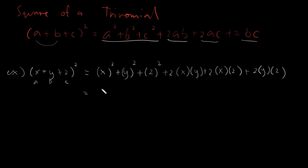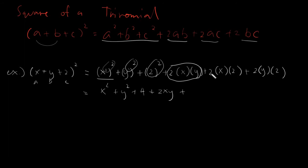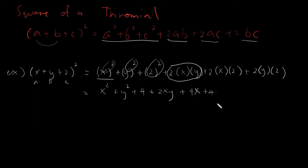Substituting is very important. So we will have X squared plus Y squared — because 2 times 1 gives us that — plus 2 squared, which is 4. When multiplying numbers and letters with nothing common between them, you simply write them together: 2XY. Plus, since the numbers are 2 and 2, we multiply 2 times 2 to get 4, and X is alone so we take 4X. And finally, 2 times Y times 2 is 4Y.